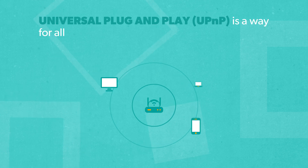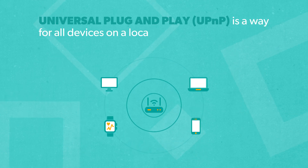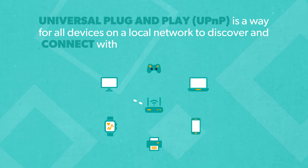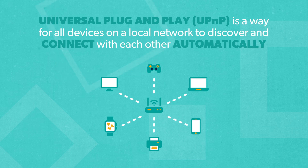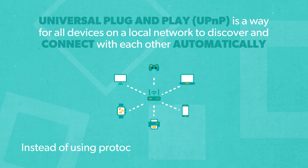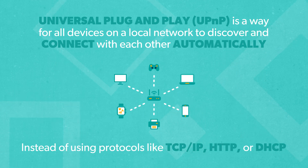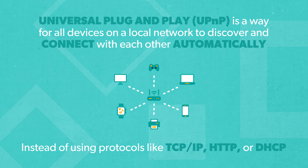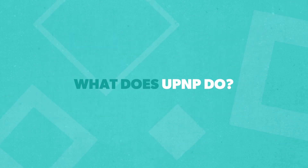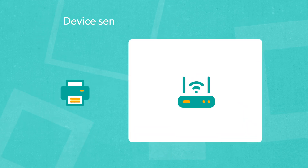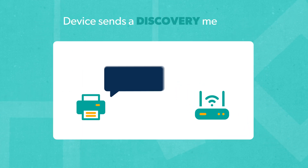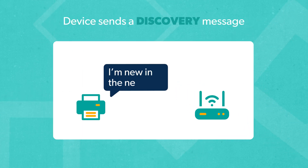Universal Plug and Play, or UPnP, is a way for all devices on a local network to discover and connect with each other automatically. Rather than having to connect each device by manually entering protocols like TCP/IP, HTTP, or DHCP, UPnP makes connecting devices on a network simple and seamless.